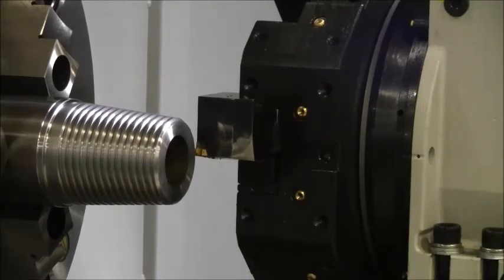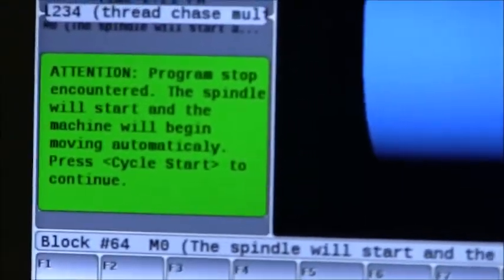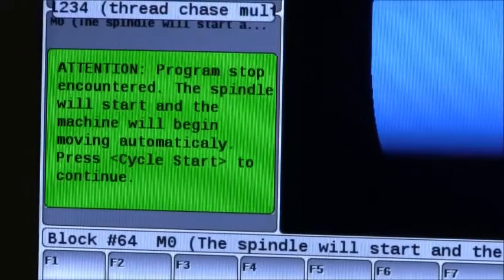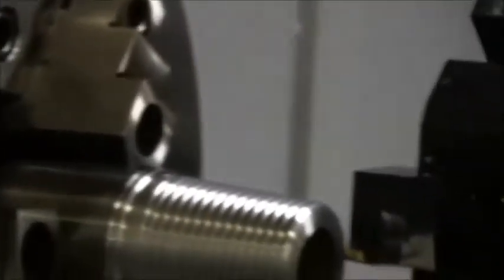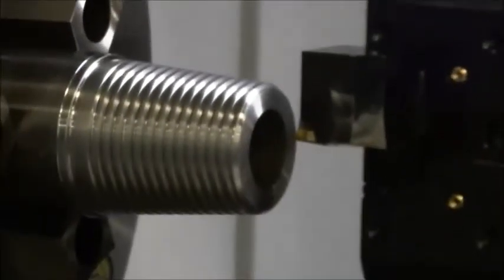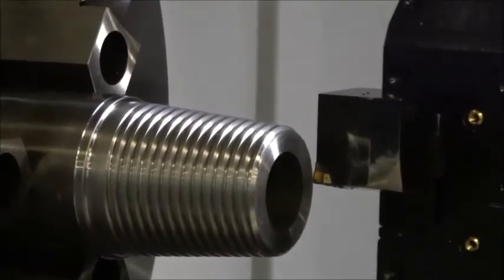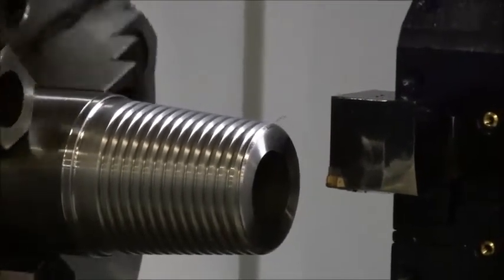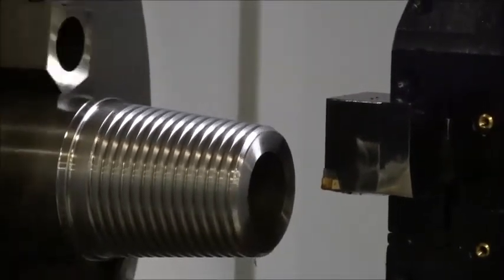And the tool retracted. Now on the control screen there's going to be a message saying the program stopped and encountered and the spindle is going to begin automatically. So we're going to press cycle start on the control. Now the spindle started.